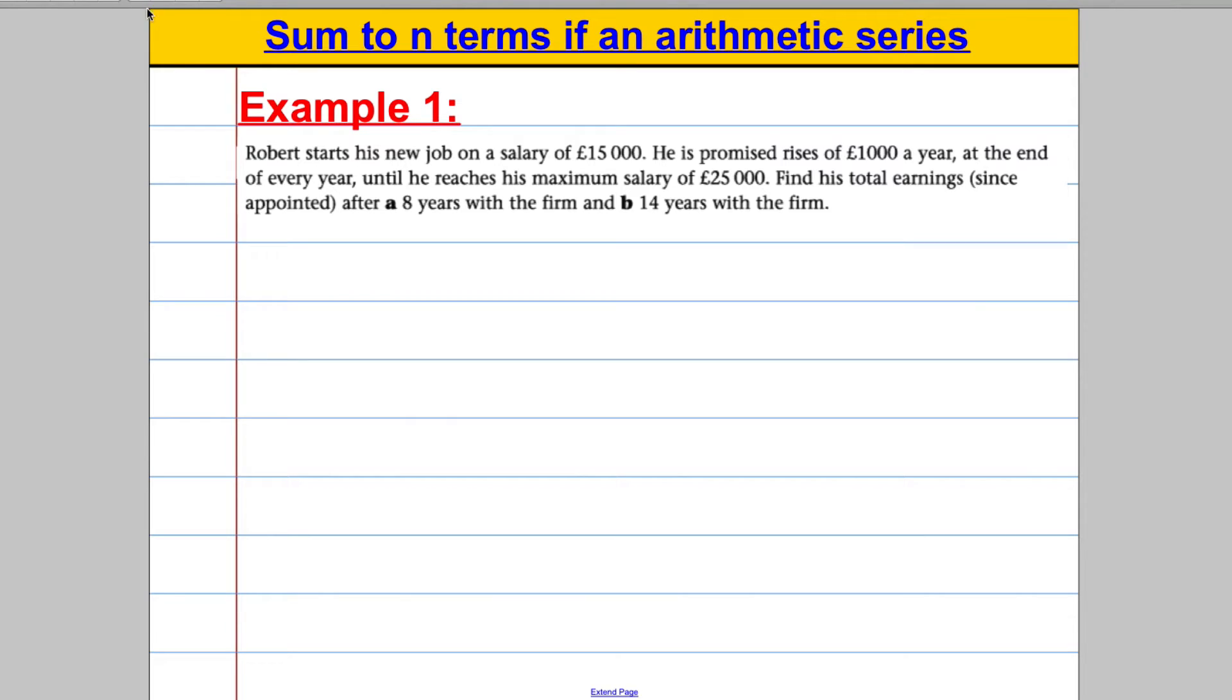Robert starts his new job with a salary of £15,000. He's promised rises of £1,000 each year at the end of every year until he reaches his maximum salary of £25,000. Find his total earnings since appointed after eight years with the firm and 14 years with the firm.